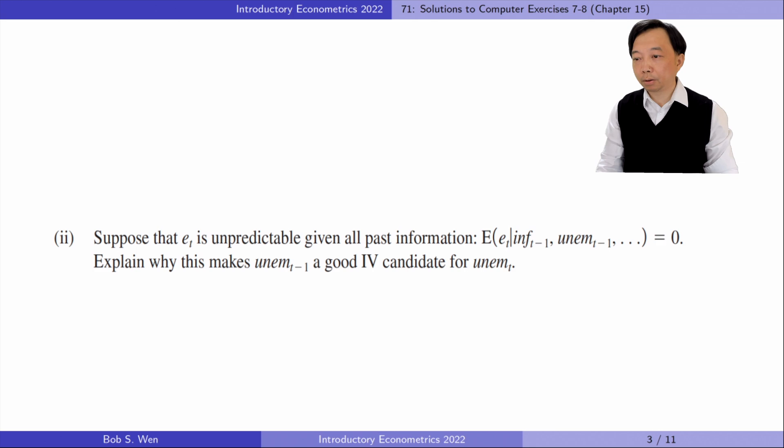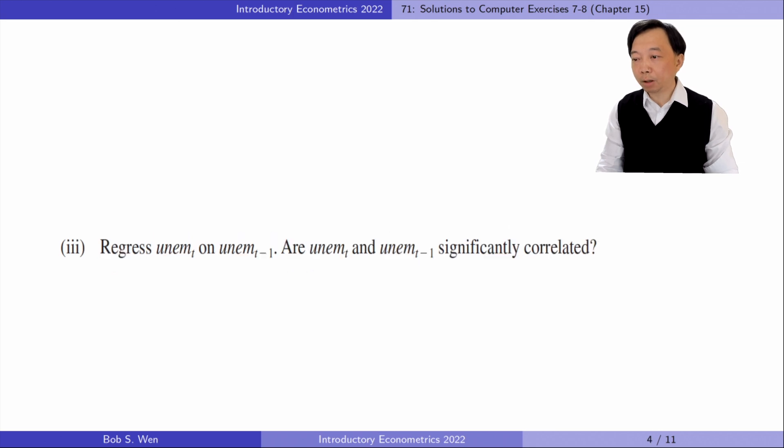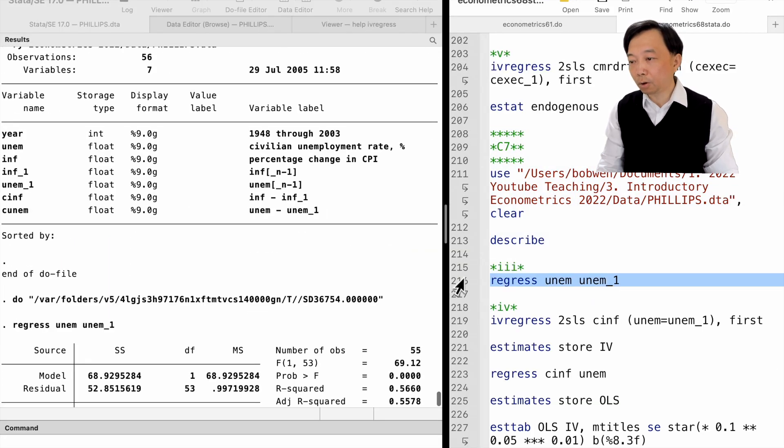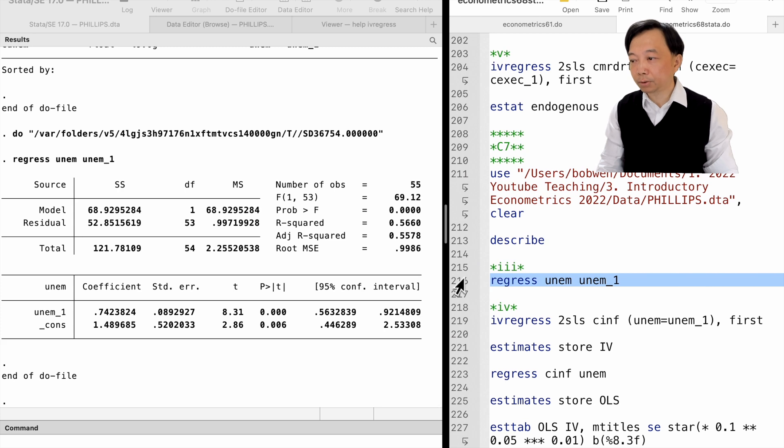In part 3, we regress unemployment in T on unemployment in T-1. Are they significantly correlated? The simple OLS regression shows that they are highly correlated because the slope coefficient is 0.74 and statistically significant at the 1% level. The instrument relevance requirement is satisfied.